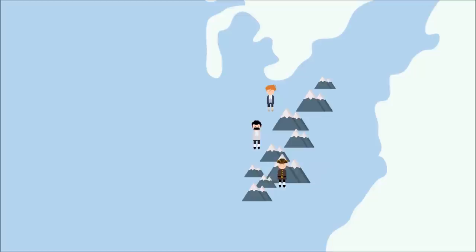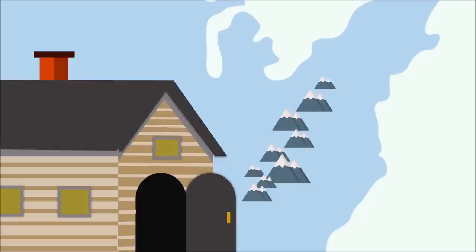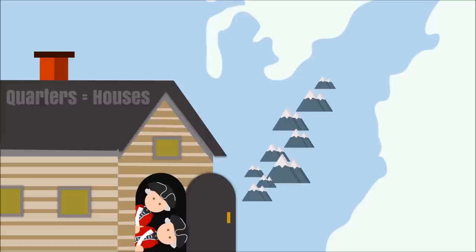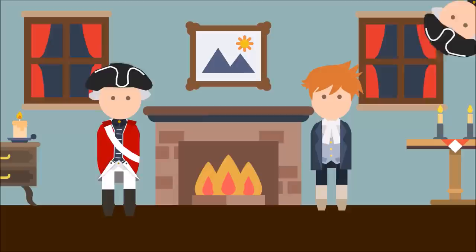More and more troops were being sent to protect them, and they were running out of places to live. Thus, the Quartering Act was passed. This act ordered colonists to provide British troops with quarters — or houses — as well as furnish the soldiers with candles, firing beds, cooking utensils, salt, vinegar, and beer cider. All of this cost the colonists a lot of money and, of course, an invasion of their personal space.